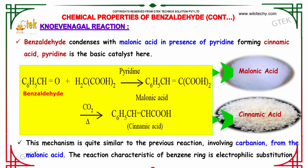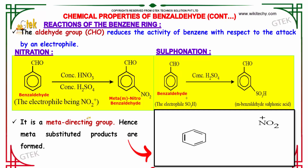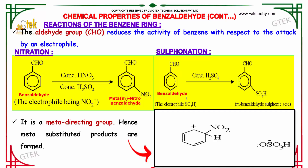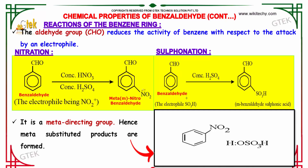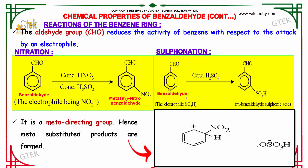The characteristic reaction of the benzene ring is electrophilic substitution. When benzaldehyde is heated with concentrated nitric and sulfuric acids, we obtain meta-nitrobenzaldehyde. The aldehyde group is a meta-directing group, so meta-substituted products are formed. In the presence of concentrated sulfuric acid, we obtain meta-benzaldehyde sulfonic acid.